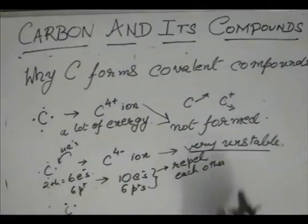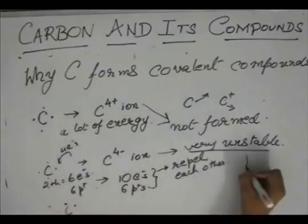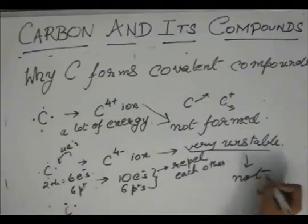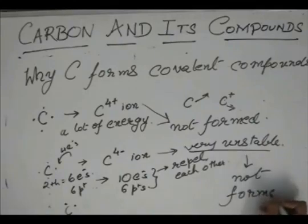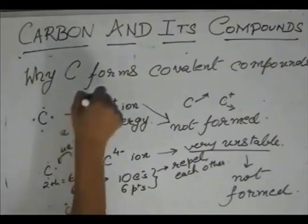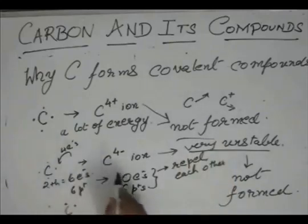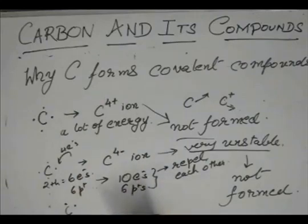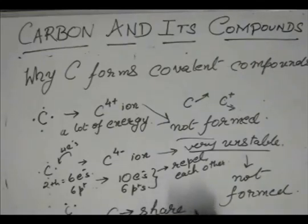Now since it becomes very unstable, it is generally not formed. So C4+ cannot be formed, C4- cannot be formed. So what will this poor carbon do? This carbon will obviously share its electrons. Since it cannot ionize, if it shares its electrons, it will form nothing but covalent compounds.